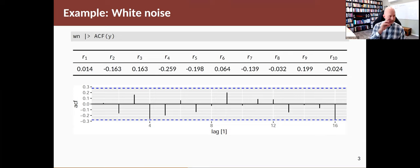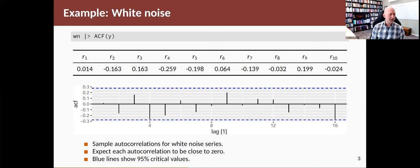In this case, all of the spikes up to lag 16 fall within the blue bands, which is what you would expect if you had white noise data. You generally expect for white noise the sample autocorrelations to be close to zero, and those blue lines give 95% critical values.